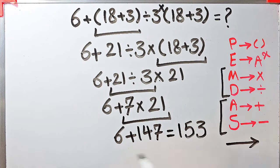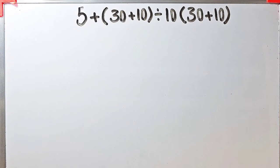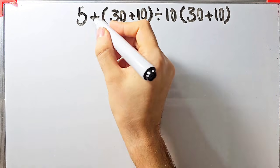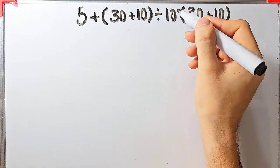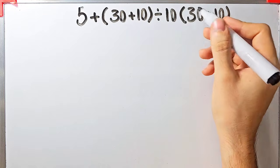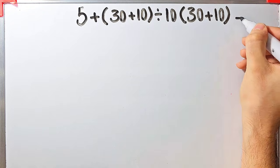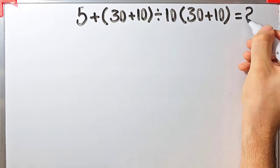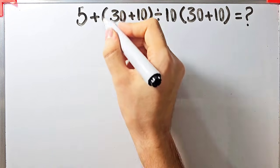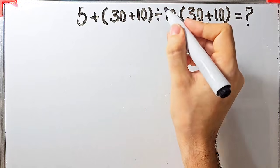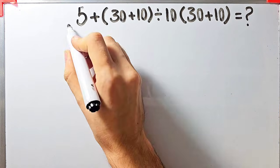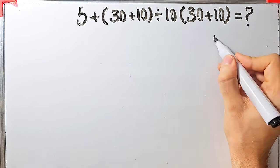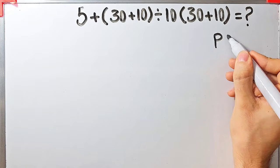Let's solve another question about PEMDAS. In this question we have: 5 plus open parentheses 30 plus 10 close parentheses divided by 10, then times open parentheses 30 plus 10 close parentheses. What is the value of this expression? We have addition, parentheses, division, and multiplication. Again, to solve this question we need to follow the order of operations, which is PEMDAS.